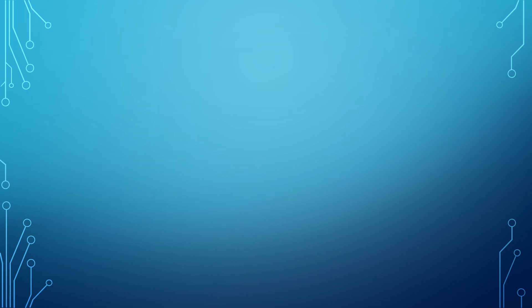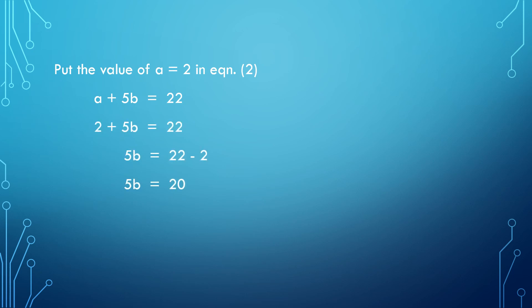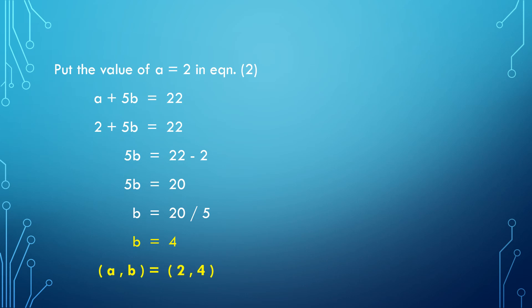Now put the value of A equal to 2 in equation number 2. Equation number 2 is A plus 5B equal to 22. Substituting A equals 2: 2 plus 5B equal to 22. Taking 2 to the right side, 5B equals 22 minus 2, which is 20. Hence B equals 20 divided by 5, so B equals 4. Therefore the solution is A equals 2 and B equals 4.